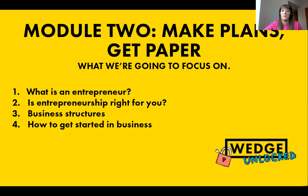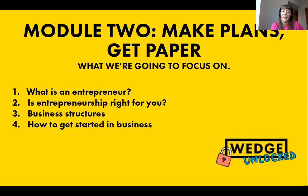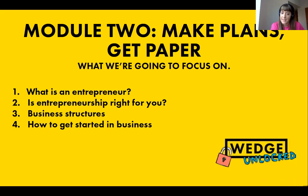Here is what we're going to be looking at in Module 2. Module 2 is all about business basics and the title of it is Make Plans, Get Paper. What we're going to focus on in this video is these four things: number one, what is an entrepreneur? Number two, is entrepreneurship right for you? Number three, the different types of business structures, and number four, how to get started in business.